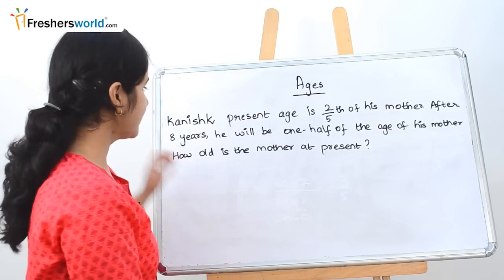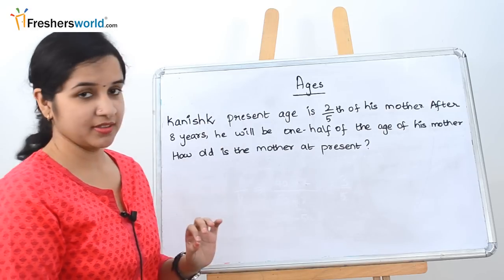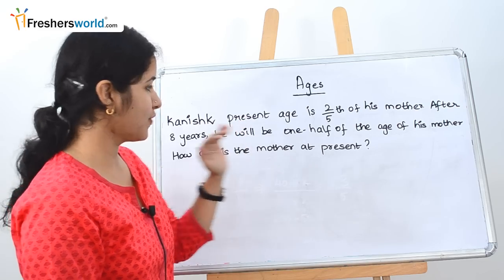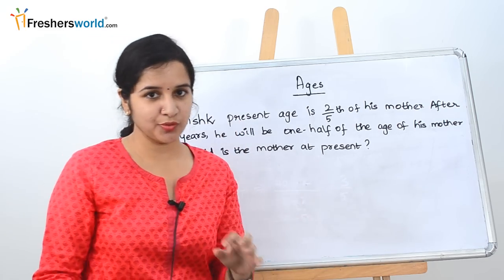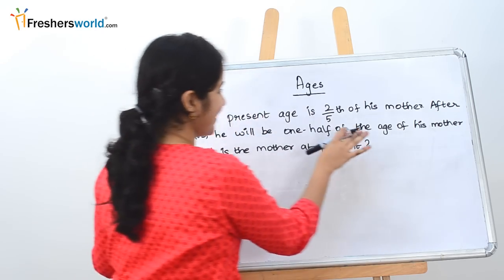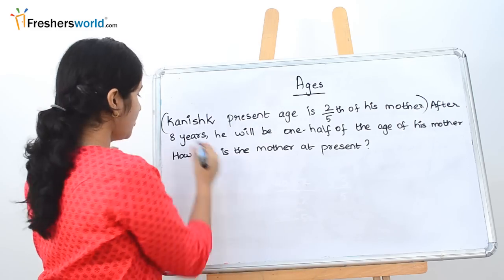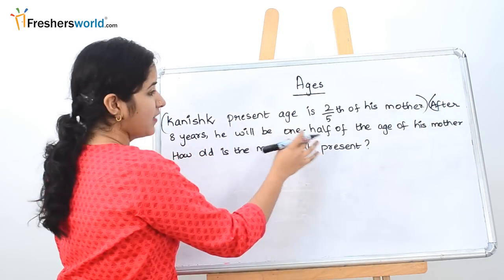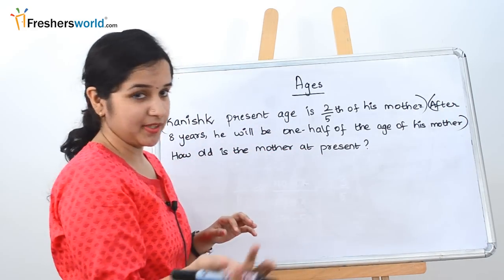The second question: Kanish's present age is 2/5 of his mother's age. After 8 years, he will be 1/2 the age of his mother. How old is the mother at present? As usual, segregate the question. The first part talks about Kanish's present age being 2/5 of his mother's. The second part talks about after 8 years he will be half his mother's age, and they are asking for the mother's age at present.